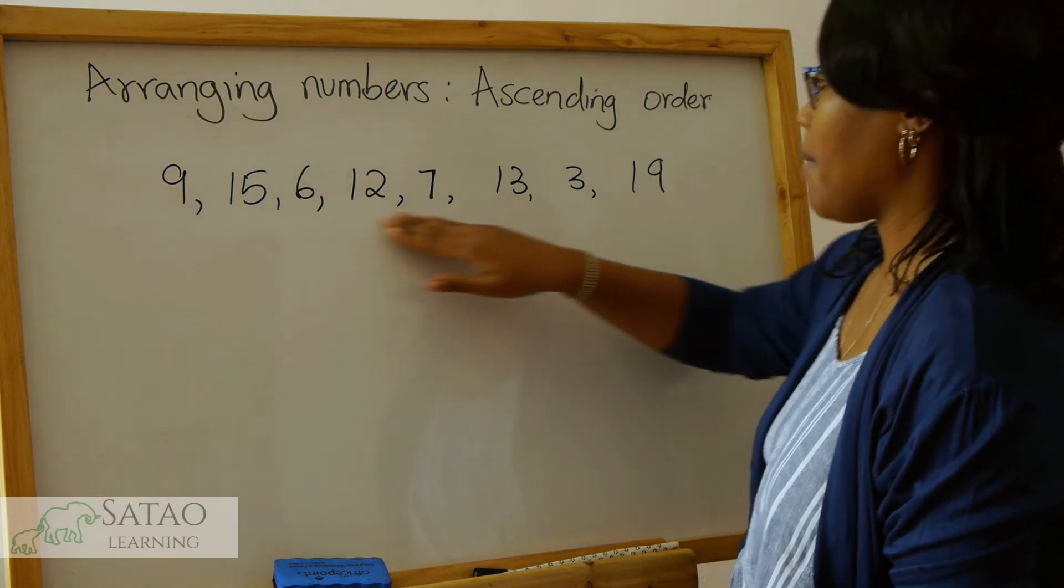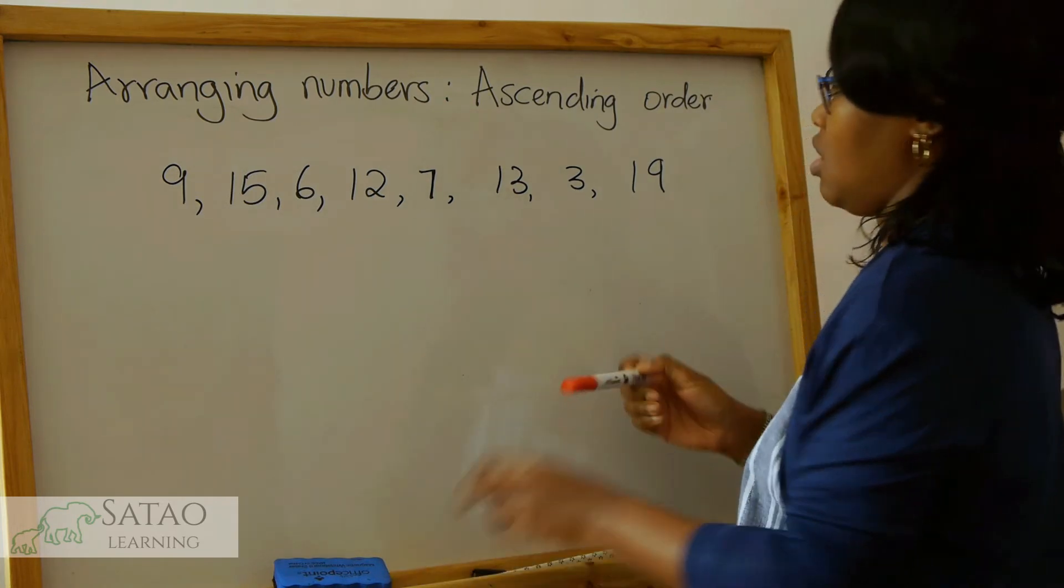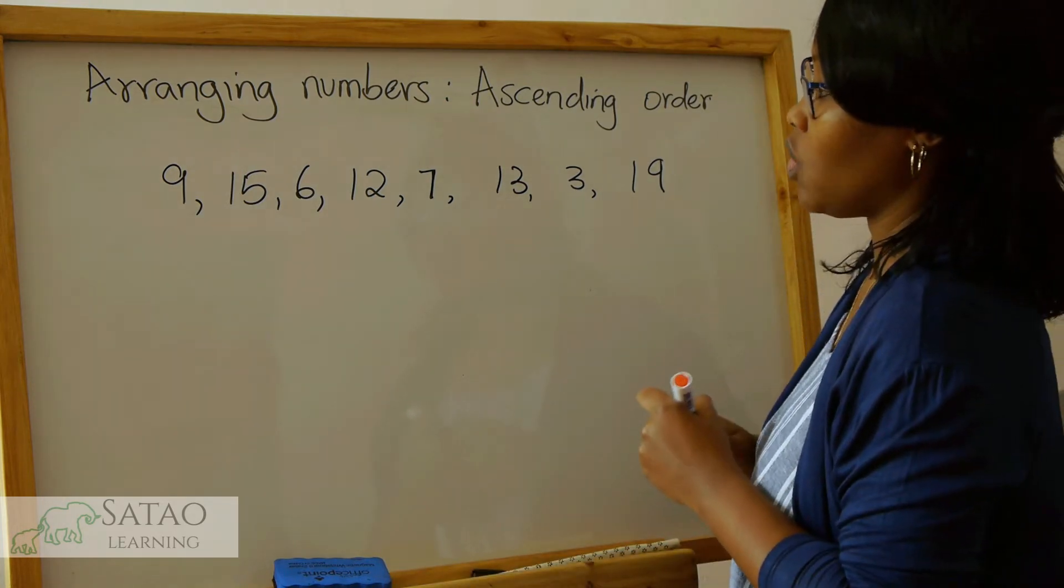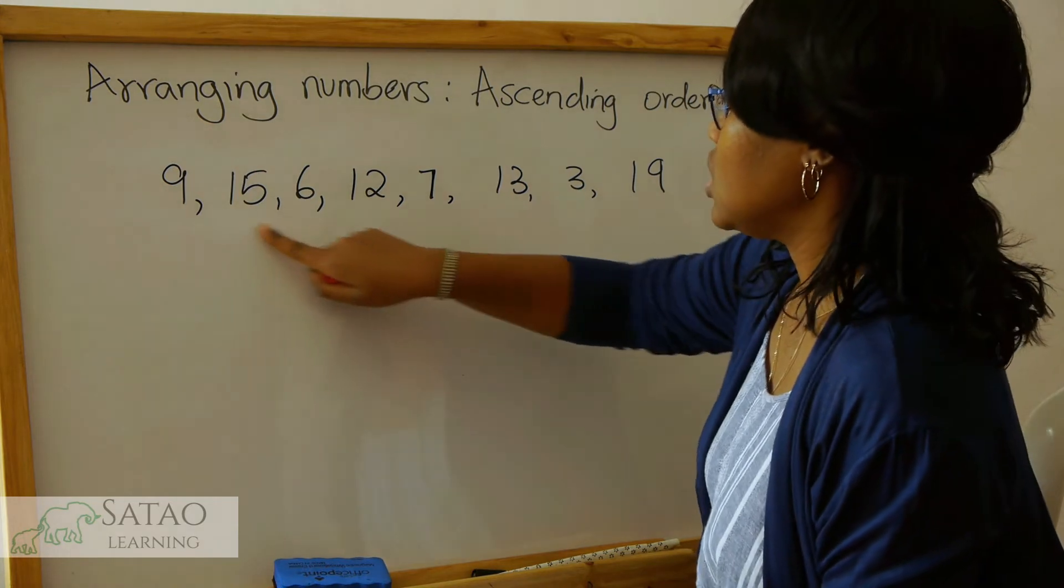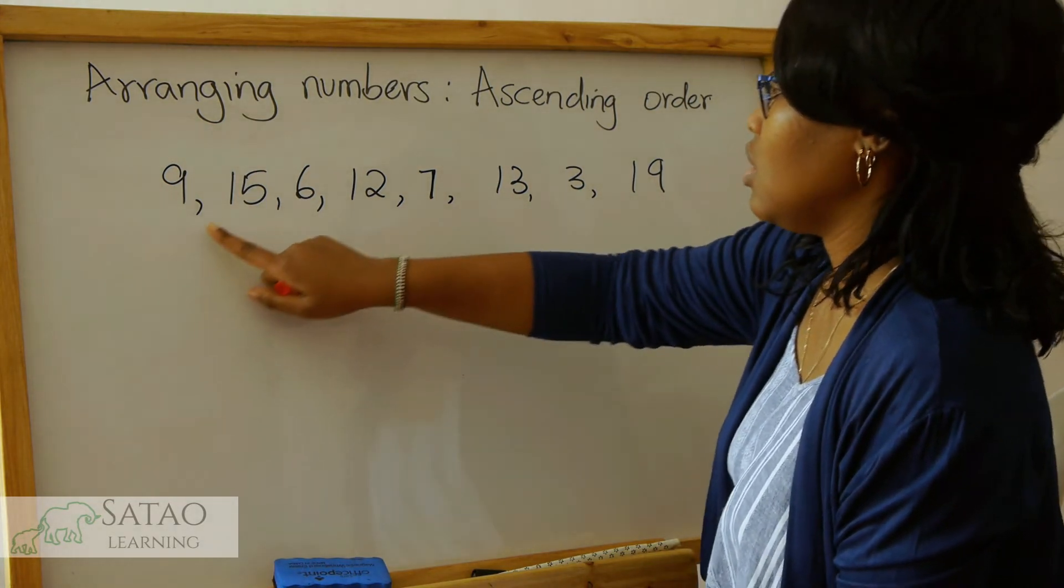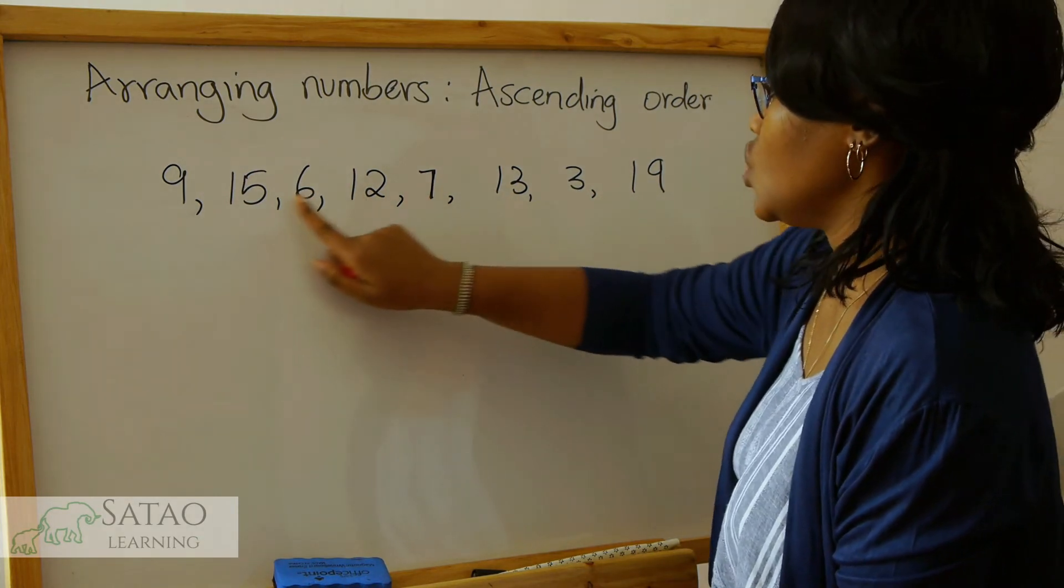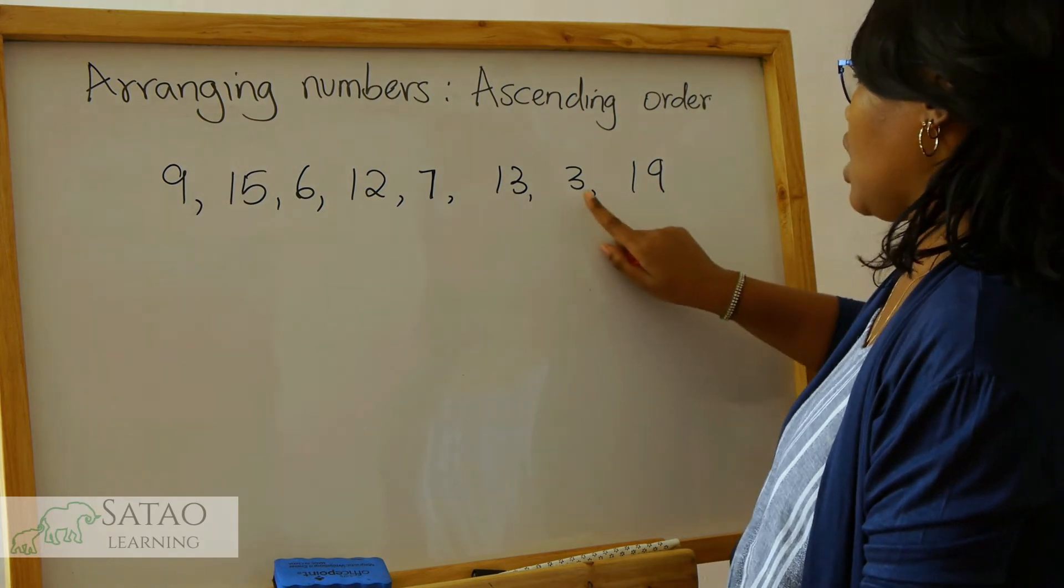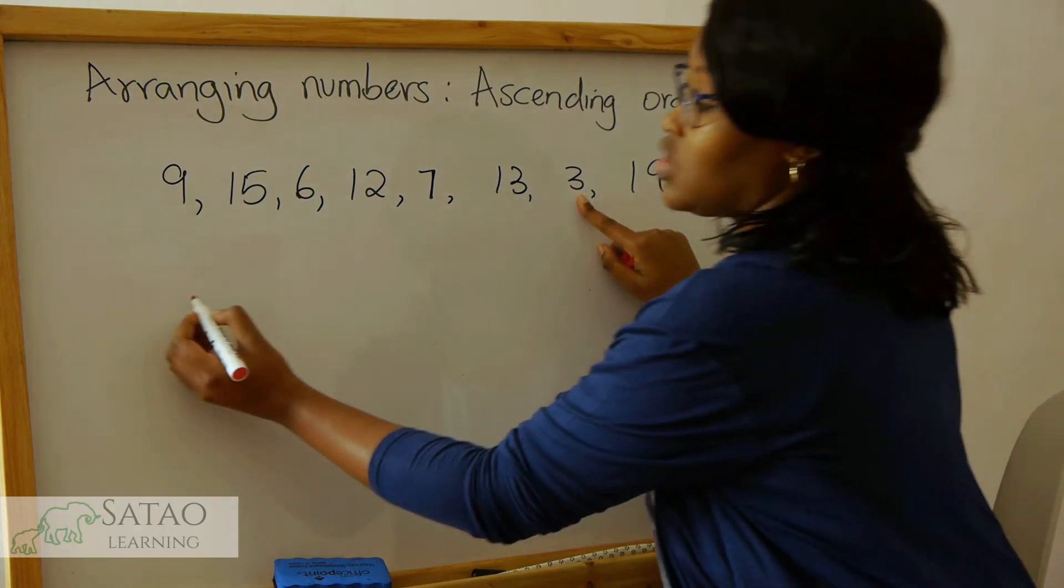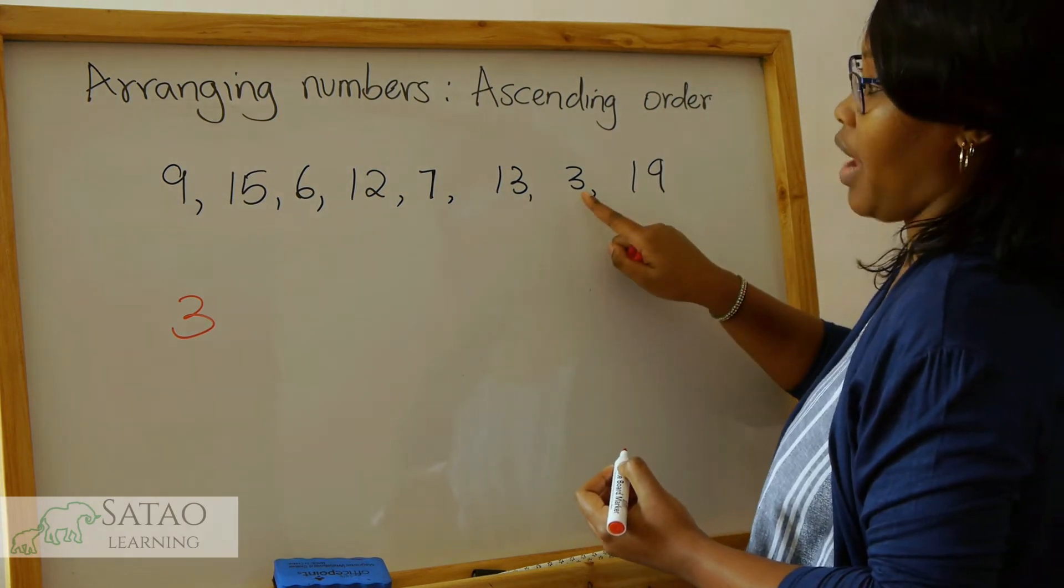So we look at these numbers and then we start by looking for the smallest number. In this case, if we count from 1, there's no 1, there's no 2. What we have is 3.